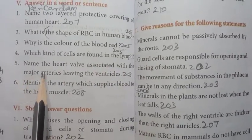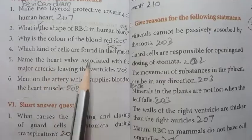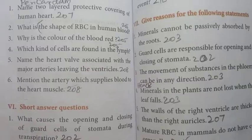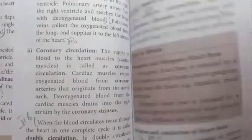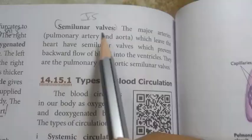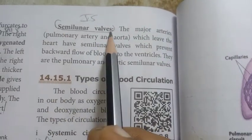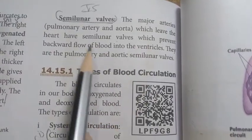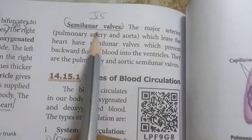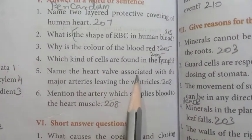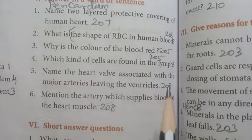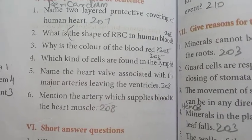Then number five: name the heart valve associated with the major arteries leaving the ventricle. Page number 208. Semilunar valves is the major arteries which leaves the heart having semilunar valves into the ventricle. So answer is semilunar valves. Semilunar valves.